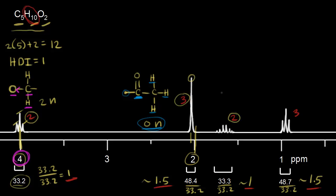For the next signal — another CH2. Counting the peaks, we see six, so six minus one is five. We would expect five neighbors using the n plus one rule. We'll come back to that CH2. Finally, the last signal has three protons — another CH3. Counting peaks: three minus one is two, so two neighbors for these methyl protons.